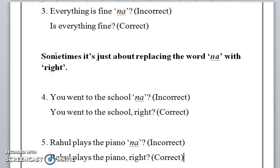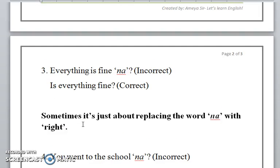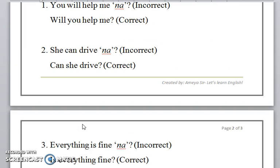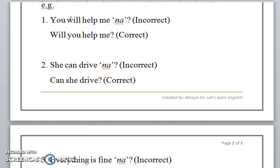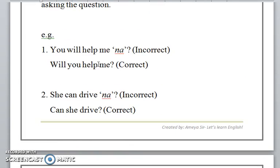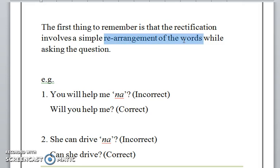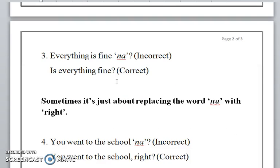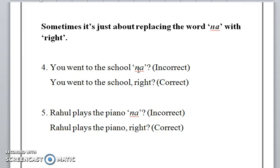When should you just replace 'na' with the word 'right'? When you do not have an auxiliary. Let's revisit those three examples we saw earlier: you have the auxiliary 'will', the second one had the auxiliary 'can', the third one had 'is'. If you have the auxiliary, you have to correct it with the rearrangement of the words. But if not, if there is no auxiliary, then you simply have to replace the word 'na' with the word 'right'.